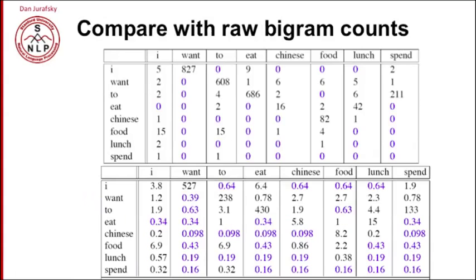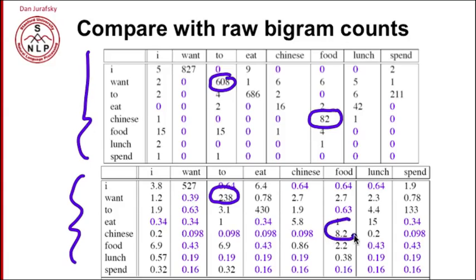And let's compare them to the original counts. So up here, here on the top, we have the original counts, and here we have our reconstituted counts. And I want you to notice that there is a huge change. So in our original count, two followed want six hundred eight times. In our smoothed counts, two follows want only two hundred thirty-eight times. So it's almost a third, a third smaller, three times smaller. Or Chinese food occurs eighty-two times in our original counts, and only eight point two in our reconstituted counts. So the add-one smoothing has made massive changes to our counts, sometimes changing a factor of ten the original counts, in order to steal that probability mass to give to all those massive numbers of zeros that had to be assigned probabilities.